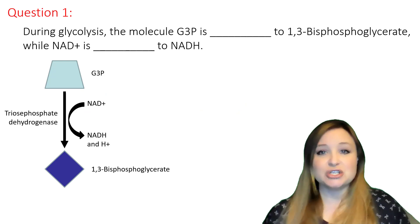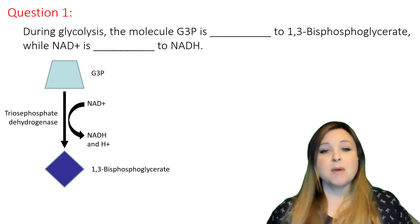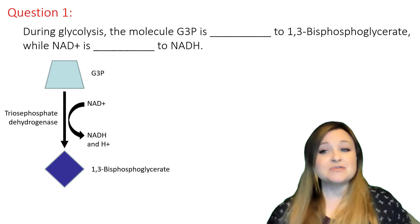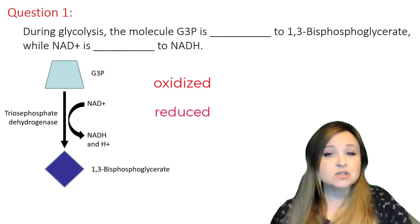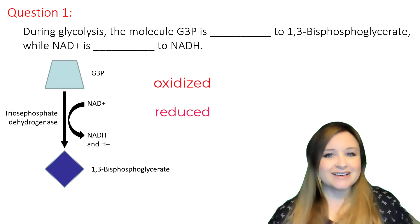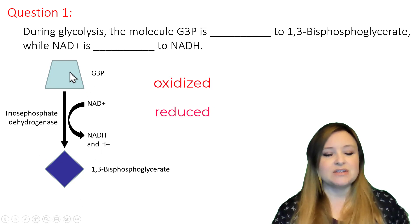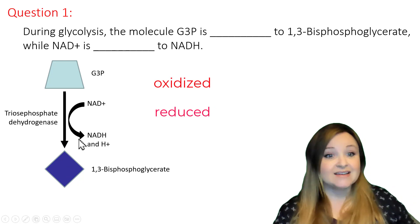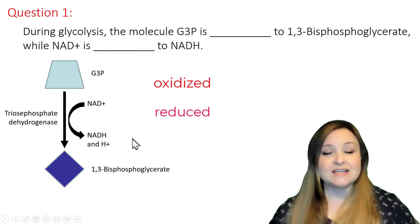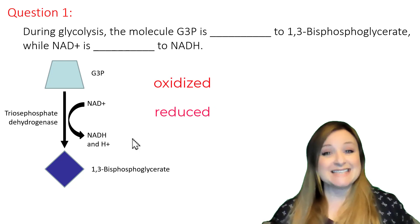Let's go over a couple of practice questions. Question one: during glycolysis, the first reactions of cellular respiration, the molecule G3P is blank to 1,3-bisphosphoglycerate, while NAD+ is blank to NADH. We need to fill in the blanks with either oxidized or reduced. Pause the video and see if you can fill in the blanks — remember, oxidation is loss of electrons and reduction is gain of electrons.